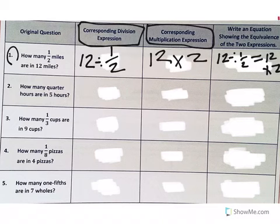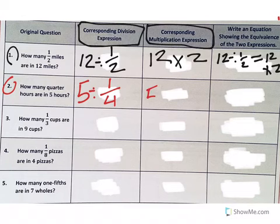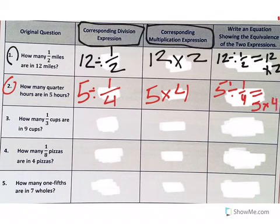Let's move down. Number 2. How many quarter hours are in 5 hours? Well, if I'm taking the 5 hours and I'm dividing that up, I'm dividing it into quarter hours. A quarter is 1 fourth. So there's my division problem. If I'm going to look at that as a multiplication expression, I'm taking 5 hours times 4 quarter hours in those hours to figure that out. So then over here, 5 divided by 1 fourth equals 5 times 4.